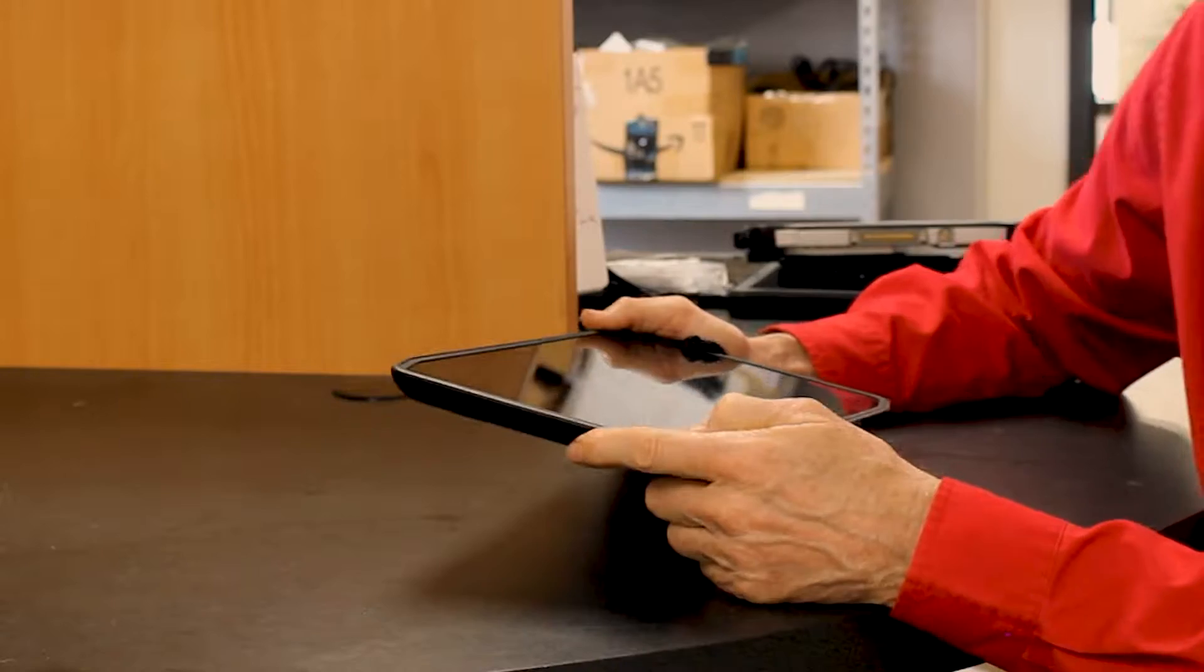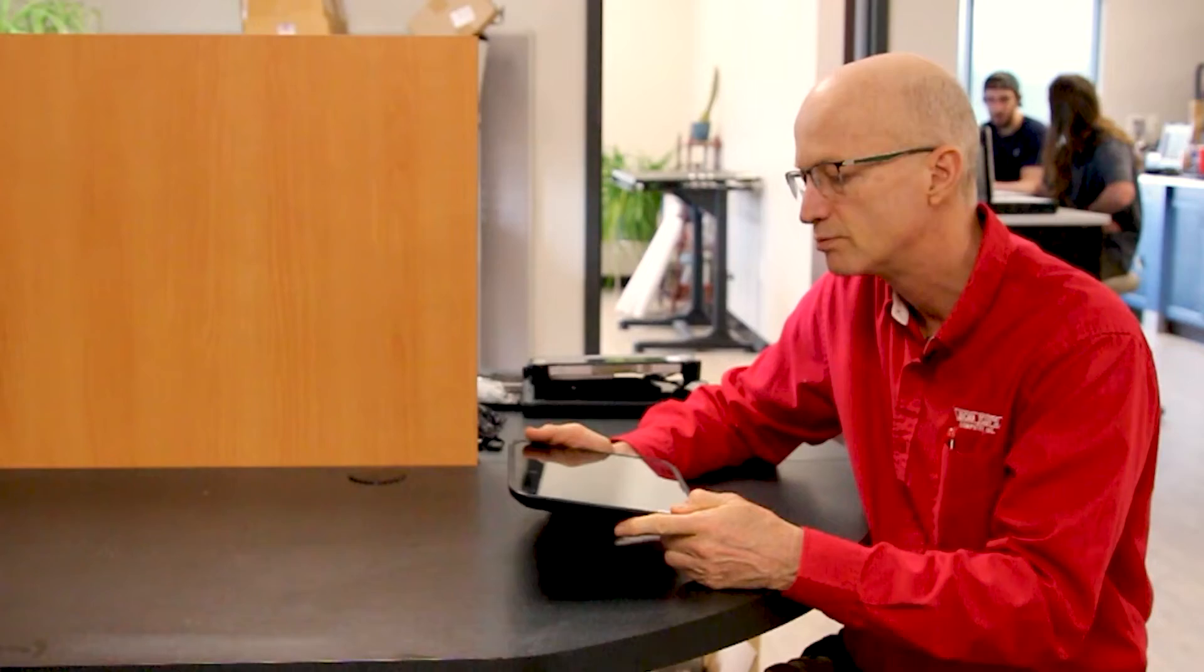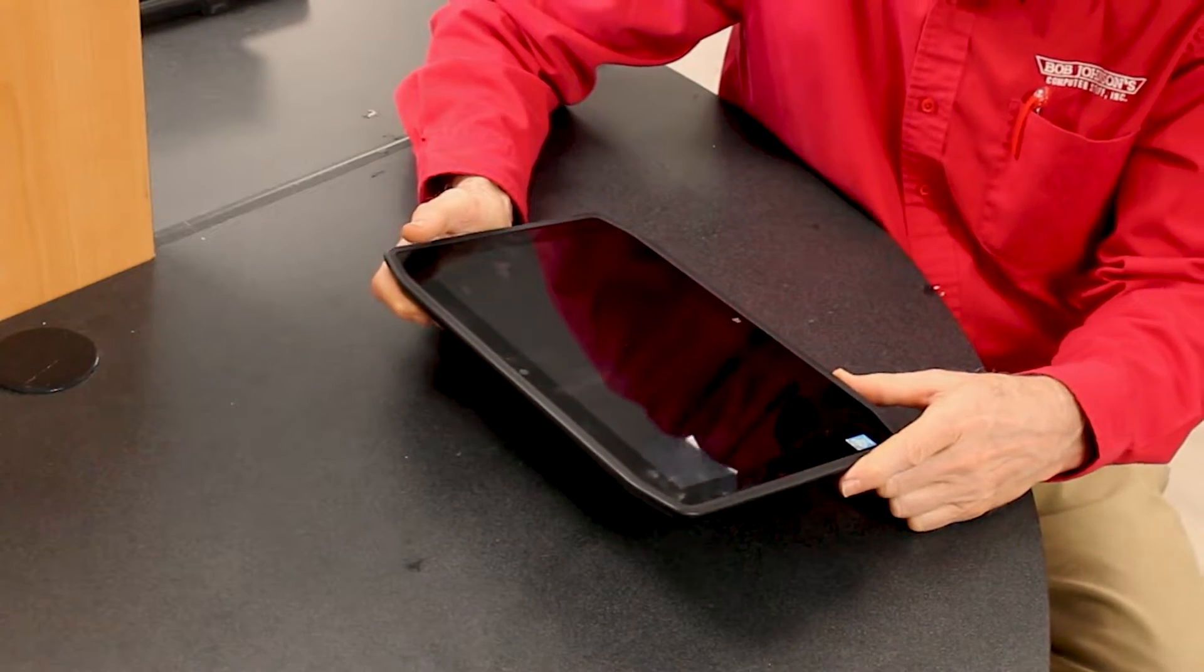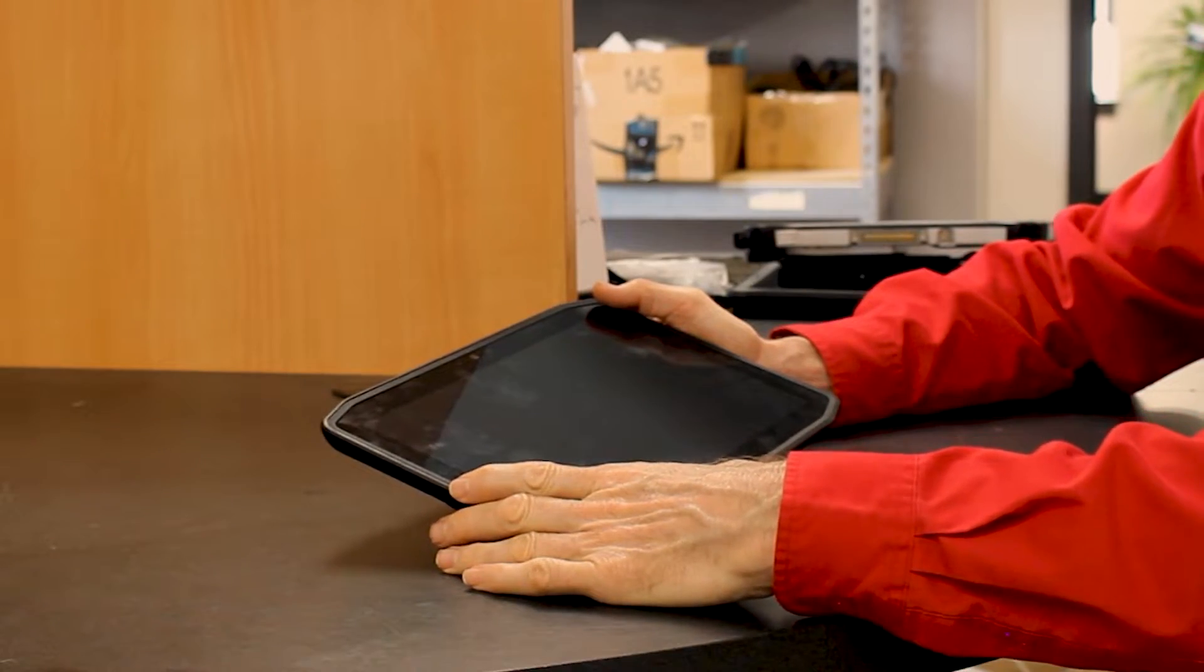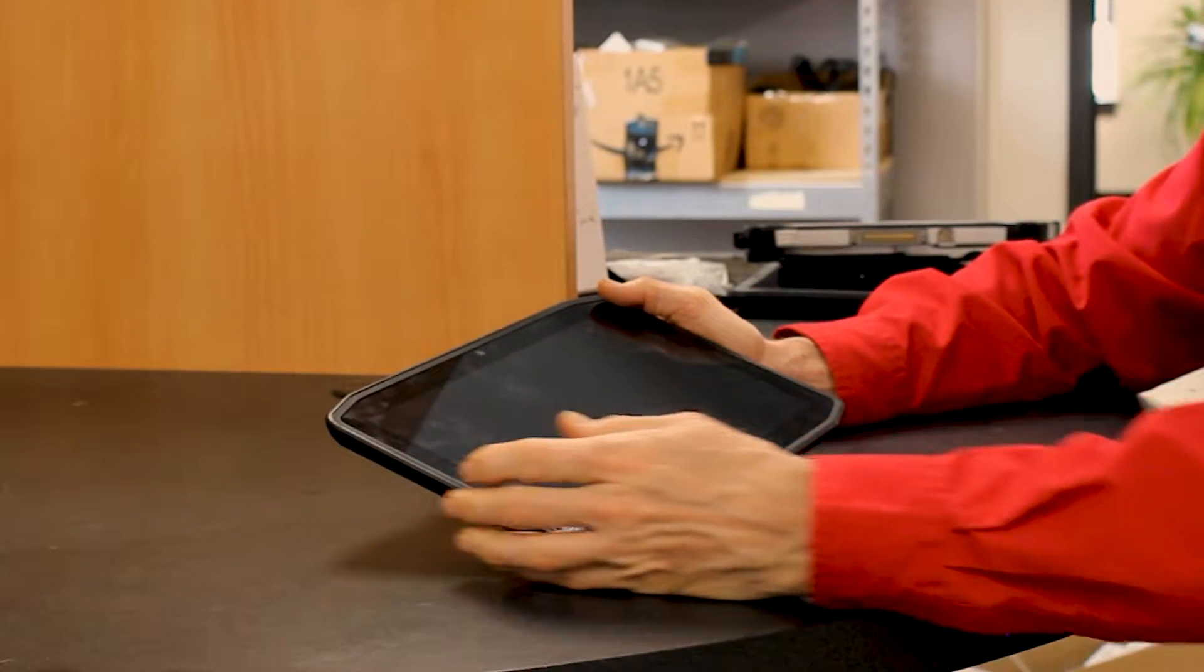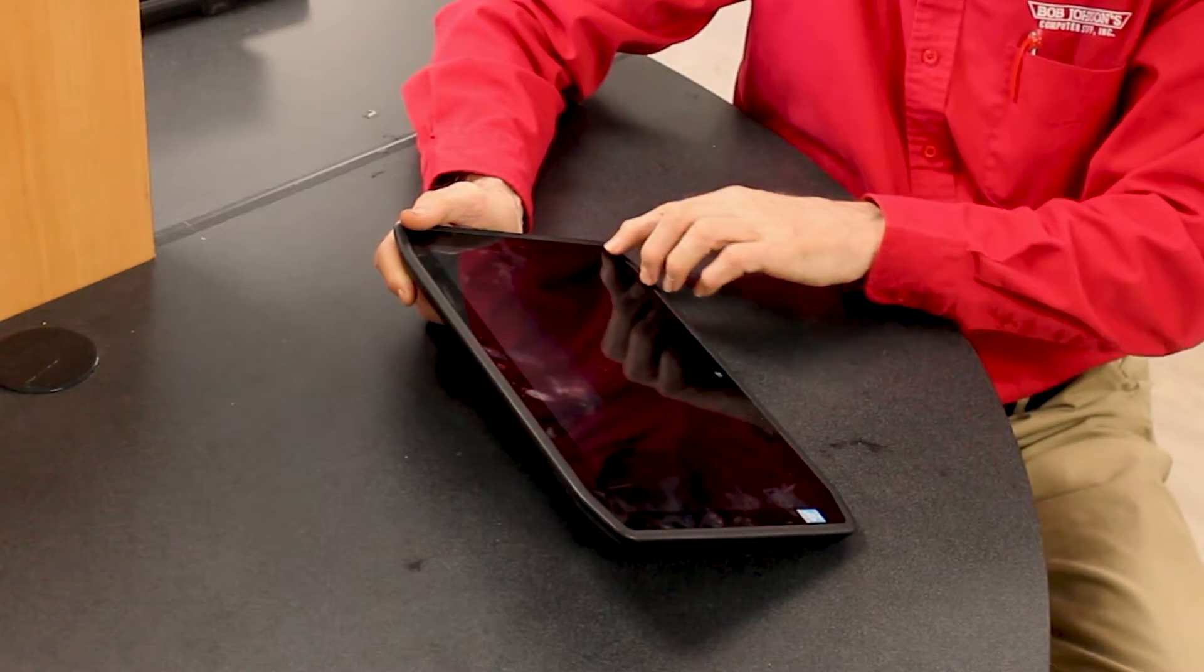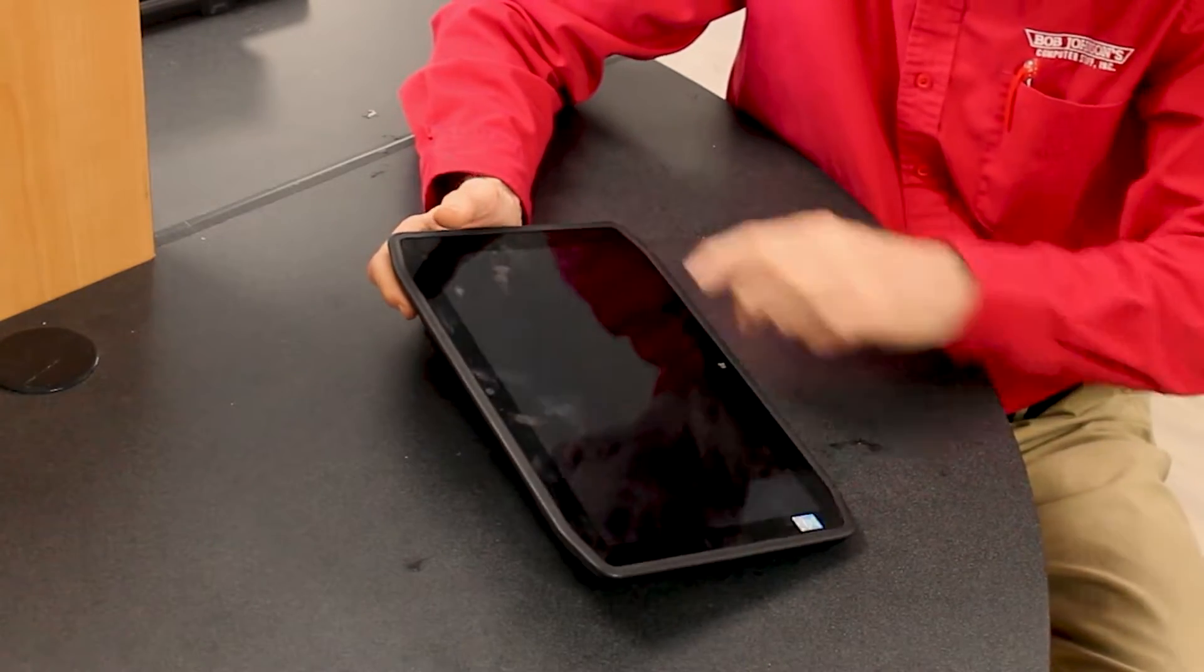Number seven is how much it weighs - this tablet only weighs 2.9 pounds, a little bit lighter than the FZ-G1 and the F110. Although it has the bigger screen, they've made it lighter. The dimensions are 0.65 inches thick, 12.9 inches long, and 8.1 inches wide, so the screen is a little bit bigger and you're going to have a bigger chassis.